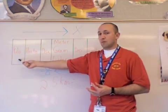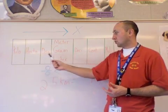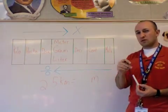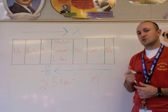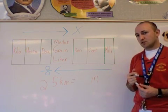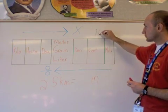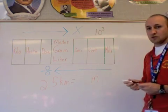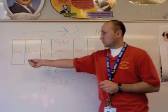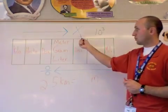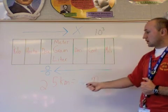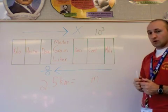So I'm starting at kilometer. Let's count them out: 1, 2, 3. And now, this is on a base 10 number system, so 10 to the third power equals 1,000. So what I'm going to do now, since I'm moving from larger to smaller and I'm multiplying, I'm going to multiply my number by 1,000.